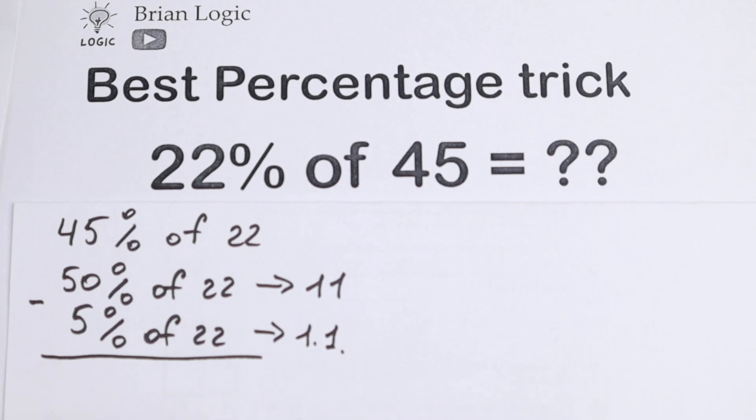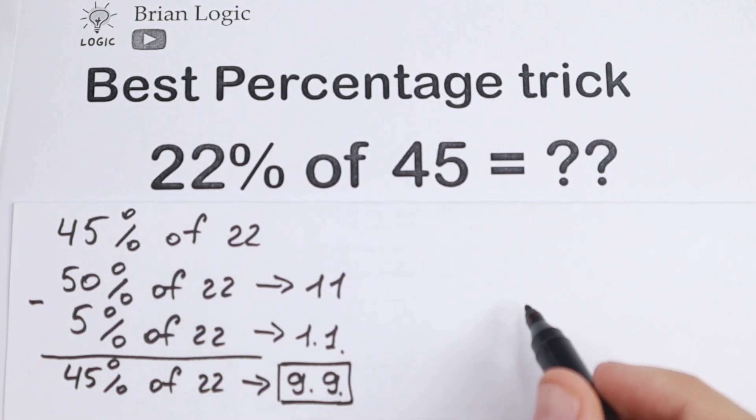So the last step, we need to subtract it. If we subtract, we will have that 45% of 22 will be 9.9. And this will be our answer.